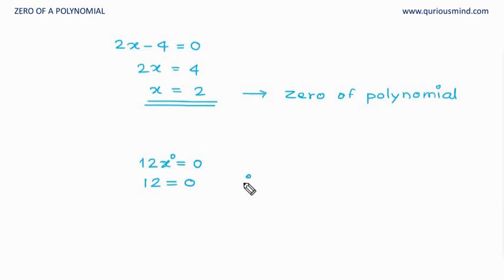And therefore a non-zero constant polynomial does not have a 0. So it does not have any solution. It does not have any root. It does not have any 0 of the polynomial.